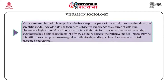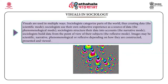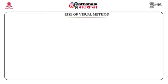Sociologists categorize parts of the world thus creating data — the scientific mode. Sociologists use their own subjective experience as a source of data — the phenomenological mode. Sociologists structure their data into accounts — the narrative mode. Sociologists build data from the point of view of their subjects — the reflexive mode. Images may be scientific, narrative, phenomenological, or reflexive depending on how they are constructed, presented, and viewed.